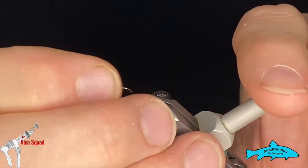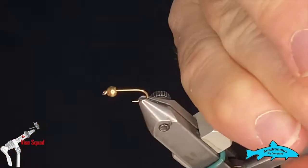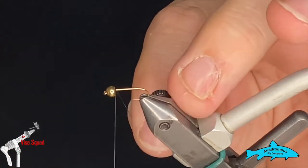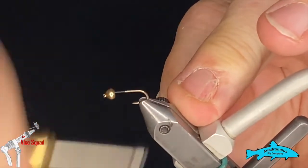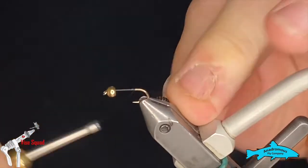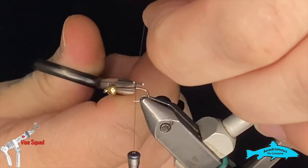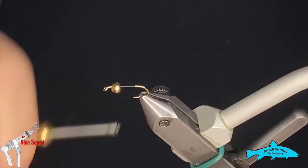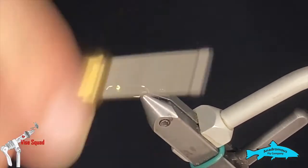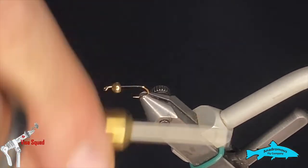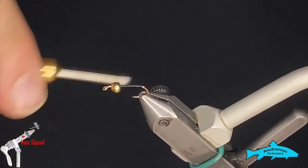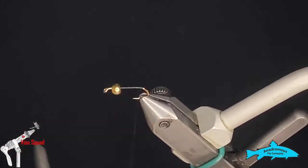In the vise we're going to start with a 1X extra long size 14 nymph hook from Togen's Fly Shop, and we're going to add a 1/8 tungsten gold bead on there. We're going to use some 12-watt black nano silk, which we'll start right behind the bead. I'm going to wind it down to the bend, and I'm going to create just a little ball of thread.